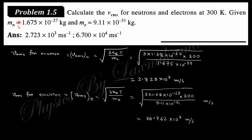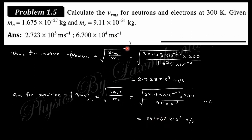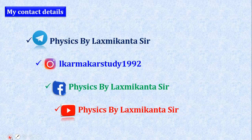The last problem asks to calculate the RMS velocity for a neutron and an electron at 300 K, given their respective masses. Using v_rms = √(3kbT/m): for the neutron, the answer is 2.73 × 10³ m/s. For the electron, using the same formula with the electron mass, you get a different answer. There may be an error in the electron calculation that the instructor could not identify — anyone finding the error is welcome to note it in the comment box.